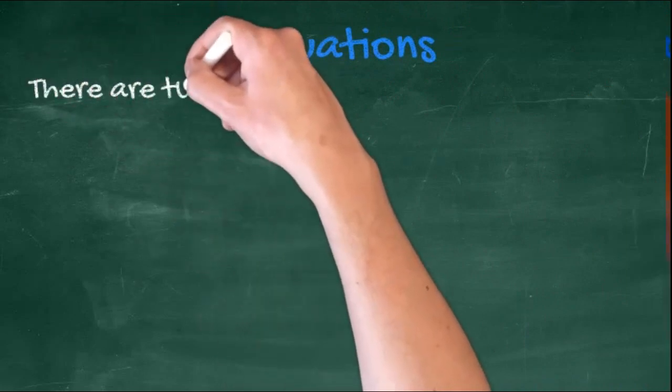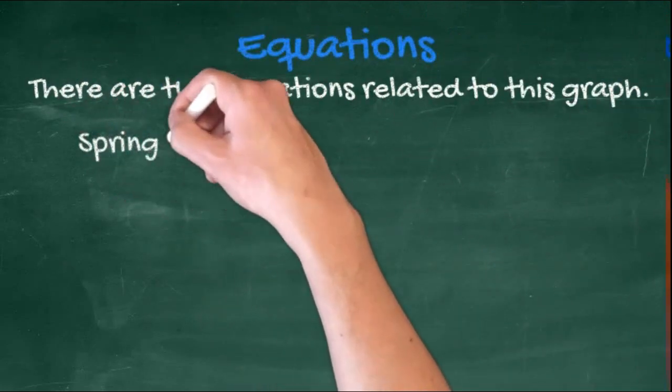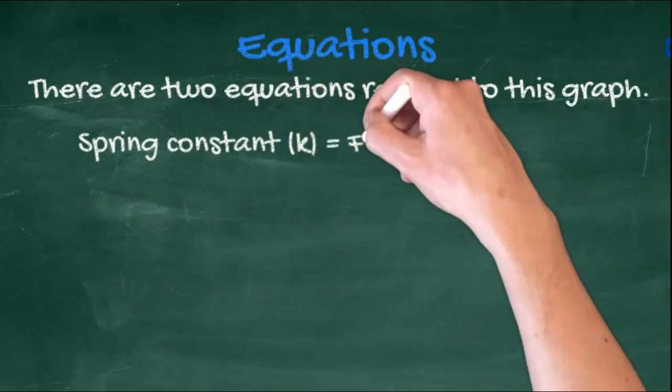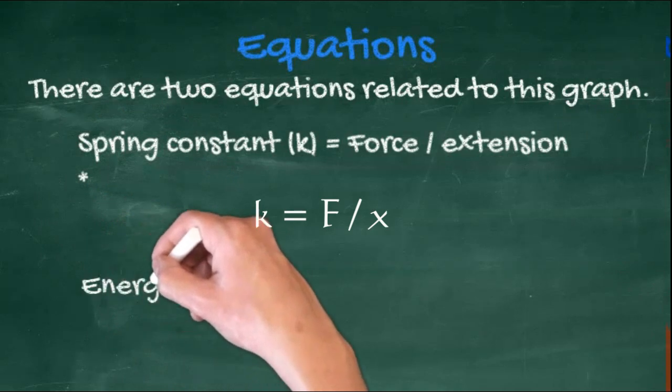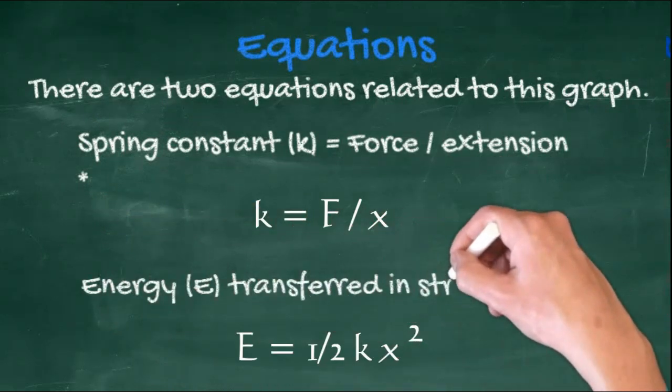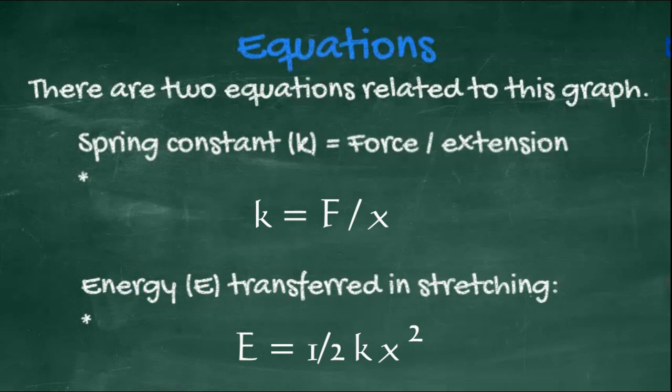There are two equations that relate to this graph. The spring constant, k is equal to the force divided by the extension, or k equals f over x. The energy transferred in stretching the spring, e, is equal to a half kx squared. You need to know the first and be able to use the second.